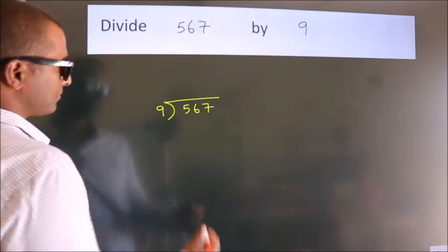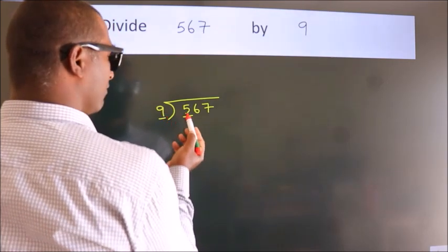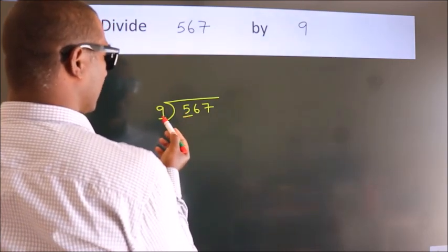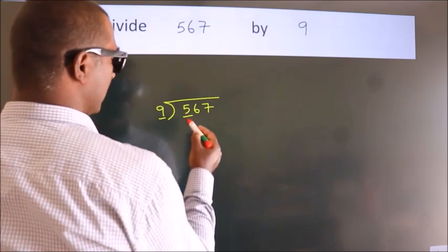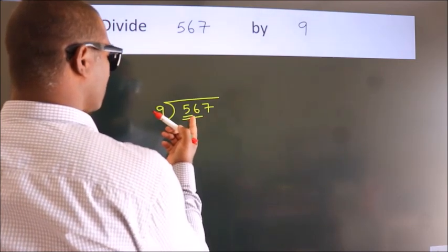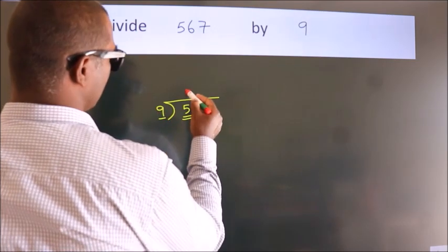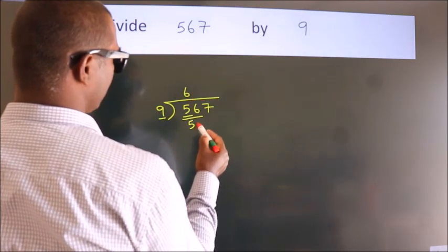Next, here we have 5, here 9. 5 is smaller than 9, so we should take 2 numbers: 56. A number close to 56 in 9 table is 9×6=54.